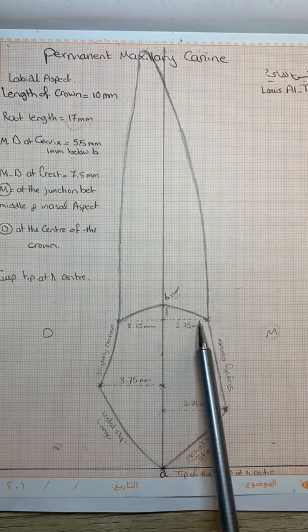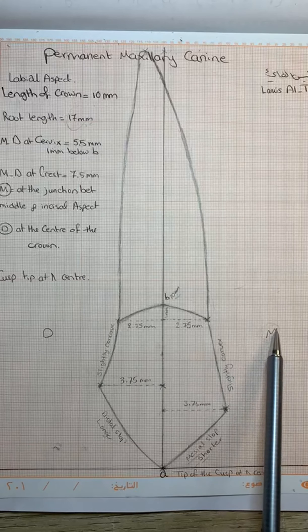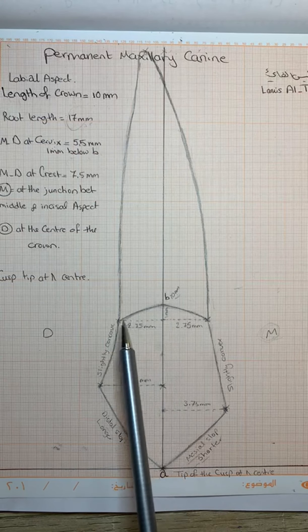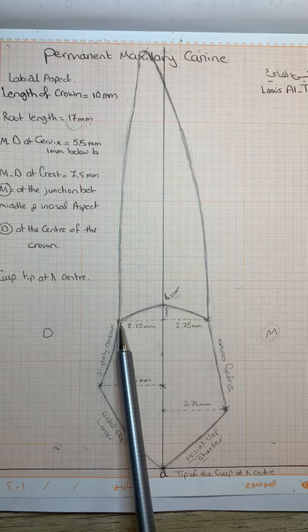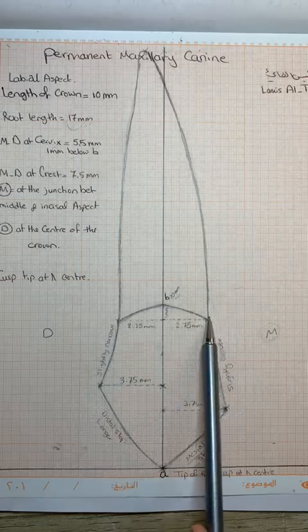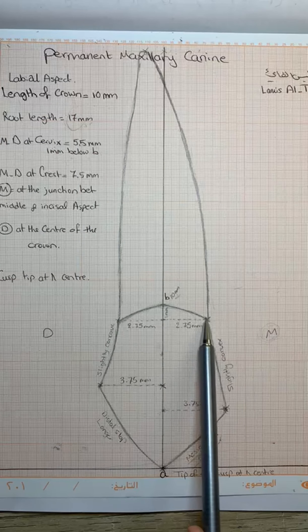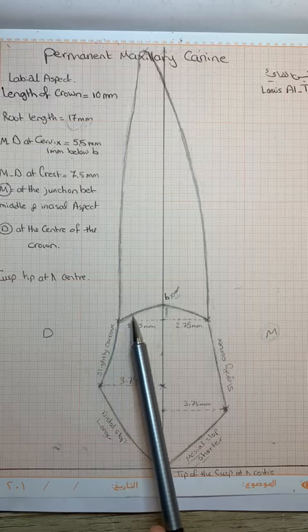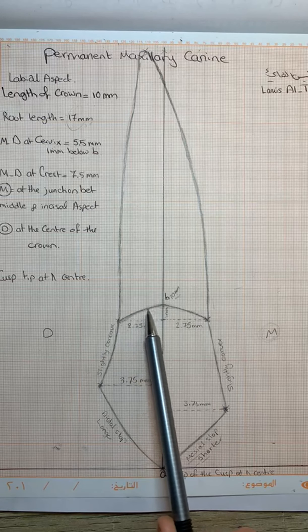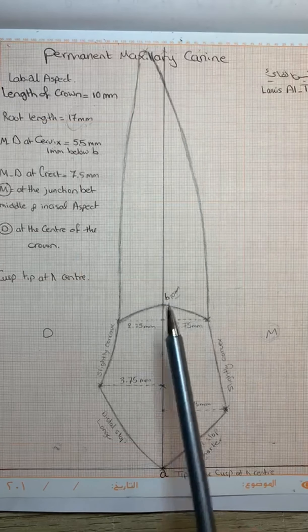We are moving 0.75 mm toward the mesial side and 2.75 mm toward the distal side. So we have the cervix, which is 1 mm below B. The cervical line is convex, with the convexity toward the root.